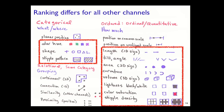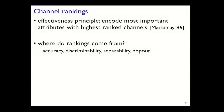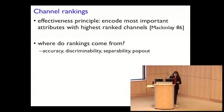Where do these rankings come from? The effectiveness principle from one of the original InfoViz papers by Jock McKinlay states: encode the most important attributes at the highest-ranked channels. Channel rankings come from our ability to accurately perceive things, how many steps we can discriminate, whether channels are separable or integral, and which things pop out via pre-attentive processing.